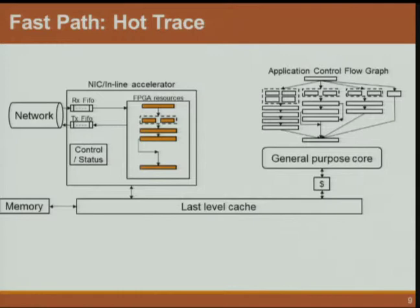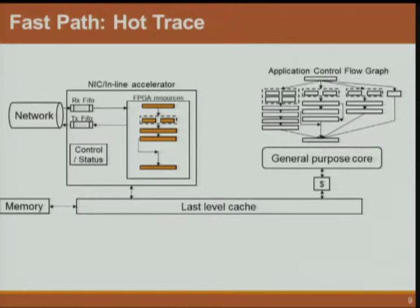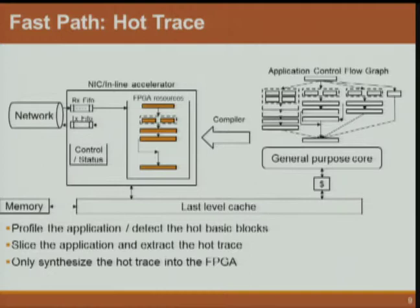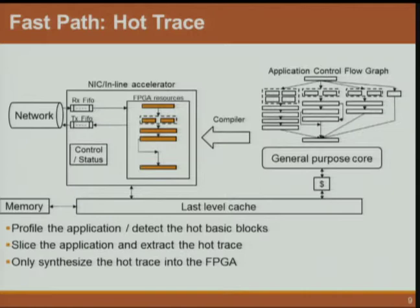The important part is how we generate this hardware. Looking at high-end routers, this hybrid architecture is not a new technique — all high-end IP routers have a split between the data plane and control plane, processing common case things in network processors and passing exceptional packets to the control plane. What we want to do is generalize this technique and extract the data plane part of any arbitrary application — at least those with certain characteristics — to accelerate it. We profile the application, detect the hot basic blocks in the control flow graph required to process the common case request, slice the application, extract the trace of these hot basic blocks, and synthesize only these hot traces onto the FPGA.